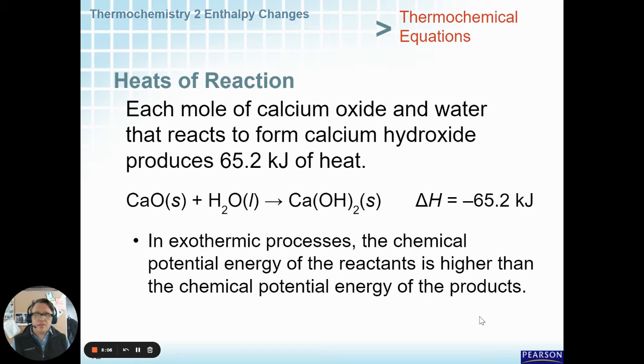One more time, each mole of calcium oxide reacting to form calcium hydroxide releases 65 kilojoules of energy, and that's listed as a negative delta H. In the exothermic process, the chemical potential energy of the reactants, in this case the calcium oxide, is going to be higher than the final energy of the product, the calcium hydroxide, and that's because energy was lost.